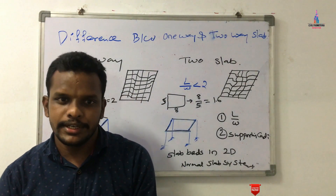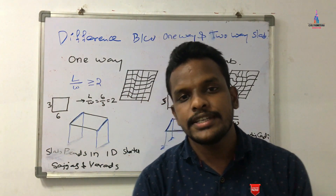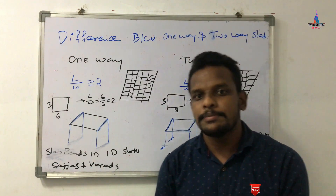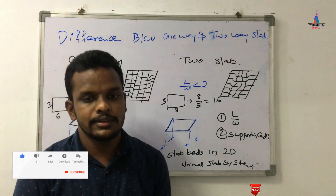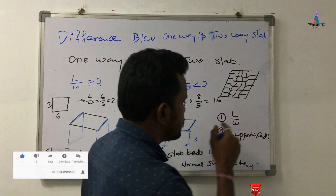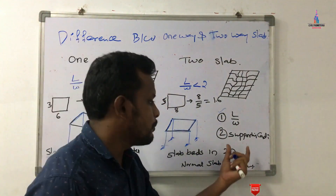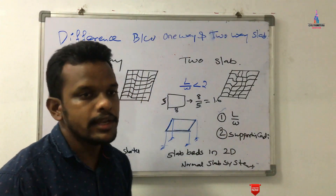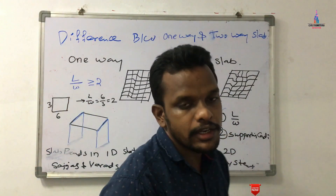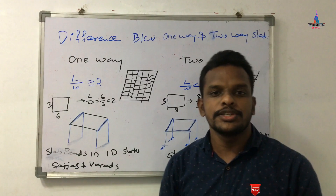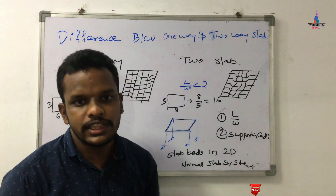Initially, I will explain the concepts related to what is meant by a one-way slab system and what is meant by a two-way slab system. The classification of one-way and two-way slab systems depends upon two factors. The first one is the L by W ratio, and the second one is the supporting conditions. Here, L is the length of the slab and W is the width of the slab.